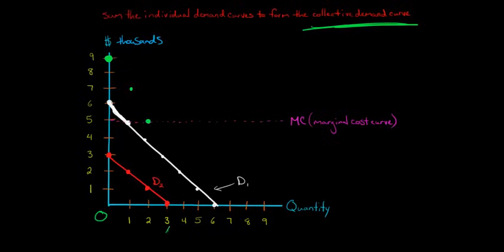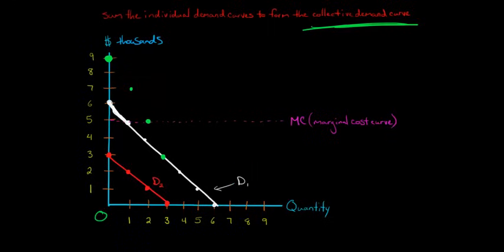When we get to quantity 3, person 2 no longer has any marginal benefit, so the collective curve just follows person 1, which is 3. At 4 streetlights the marginal benefit would be 2, at 5 it would be 1, and at 6 it would be 0 — neither of these two people gains any more marginal benefit from an additional streetlight.